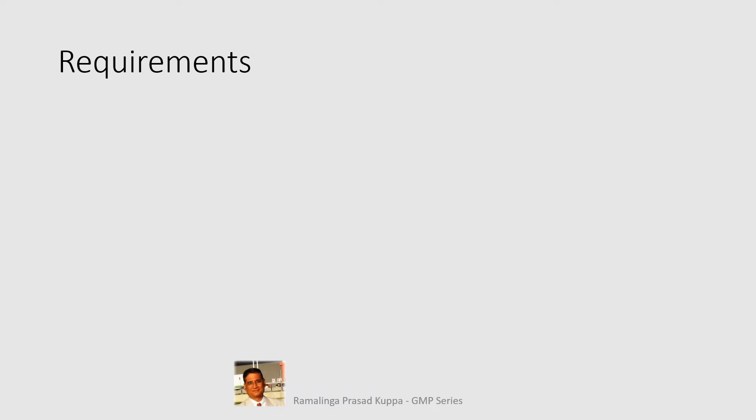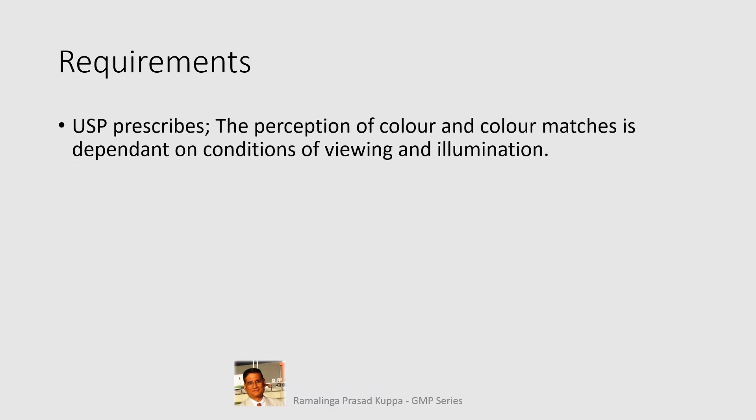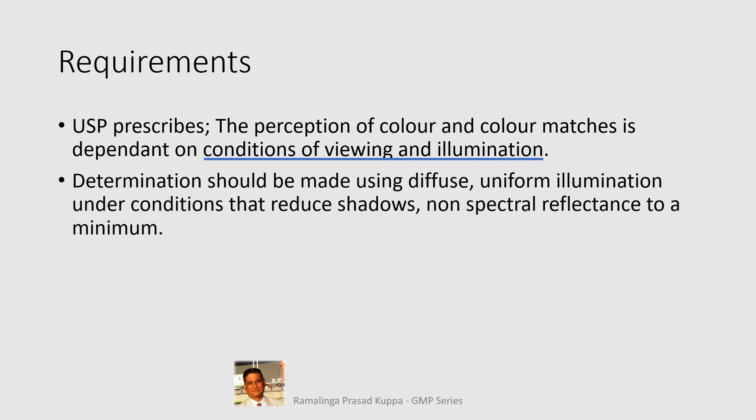Let us see the requirements. USP prescribes that the perception of color and color matches is dependent on the conditions of viewing and illumination. As we learned, the impact of source and observer on color perception means the observed color is largely dependent on these aspects. Determination should be made using diffuse, uniform illumination.